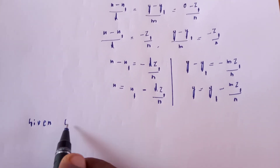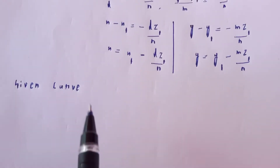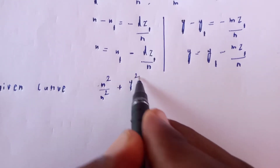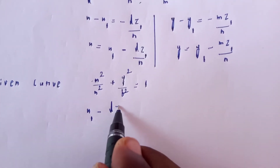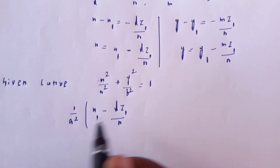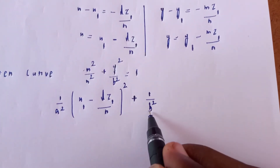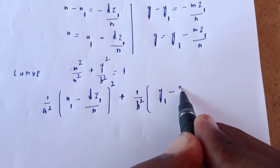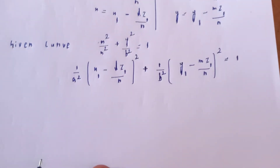Now substitute into the given curve. The given curve is x squared by a squared plus y squared by b squared equal to 1. Substituting x1 equal to x minus lz1 by n and y1 equal to y minus mz1 by n into this equation gives: 1 by a squared times (x minus lz1 by n) whole square plus 1 by b squared times (y minus mz1 by n) whole square equal to 1.